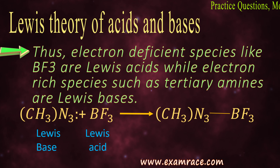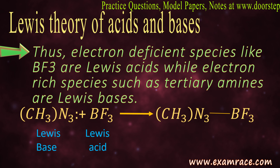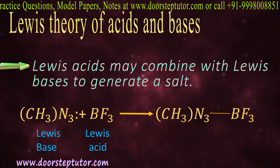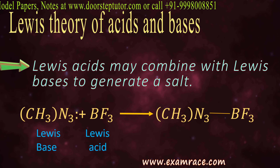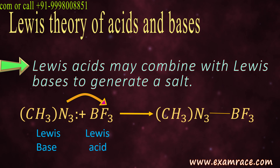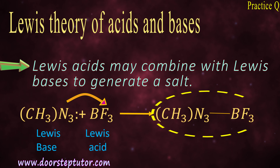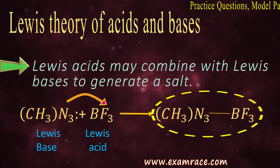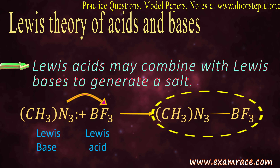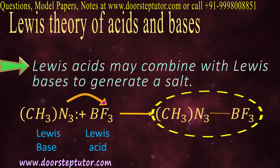BF3 will react with an electron-rich species — tertiary amine — because it has a richness of electrons. In this reaction, tertiary amine (which has a lone pair or electron pair) donates its electron pair to BF3, and on combination they generate a salt. So tertiary amine is acting as a Lewis base, giving the electron pair, and BF3 is acting as a Lewis acid, accepting the electron pair. This is the Lewis theory of acids and bases.